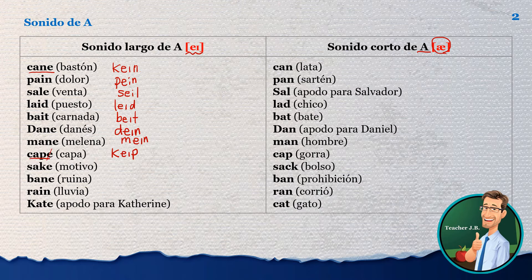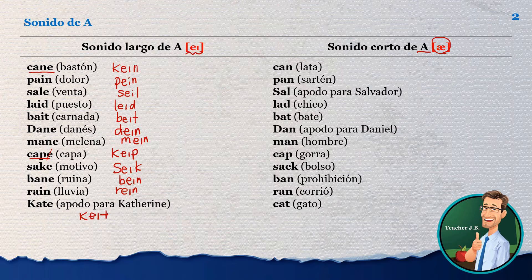E is silent, and cape. Motivo — it's 'sake,' sake. And ruina — that's 'bane,' bane. And lluvia — that's 'rain,' rain. And Catherine — that's 'Kate,' Kate. They are the A sound in English, and there are more A's.